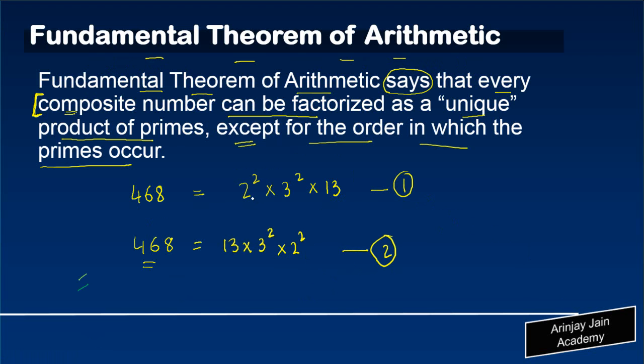Now, if you notice, in both these situations, we have 13 over here, you have 13 over here. We have 3 squared over here, you have 3 squared over here. You have 2 squared over here, you have 2 squared over here.